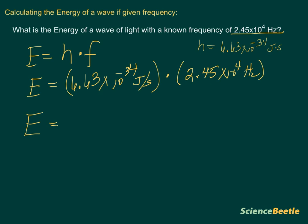The answer that you would have gotten here would have been 1.62435 times 10 to the negative 29. The units here is going to be joules, largely because the hertz on that number for the frequency and the seconds are going to cancel. That's going to leave you with the answer in joules.